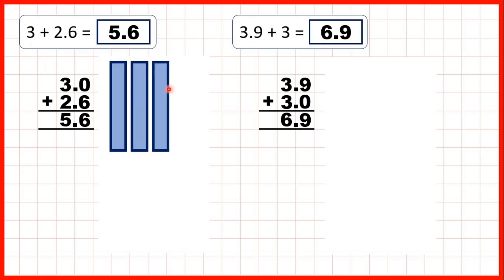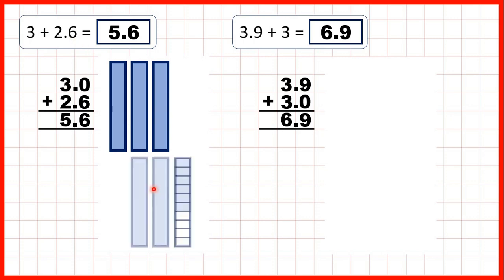Let's show what we've done. We started with three ones and we were adding 2.6, which is two ones and six tenths. In our answer we still have the six tenths, but altogether we have five ones, so that's 5.6.